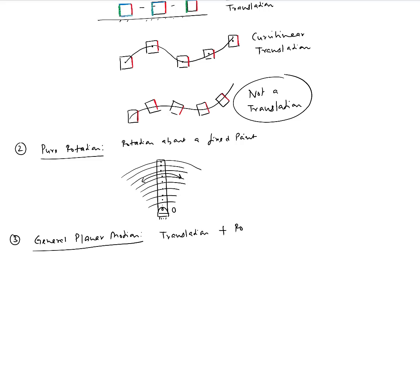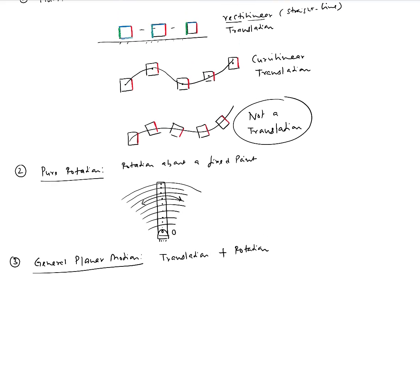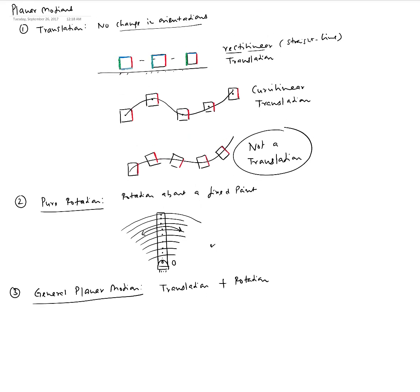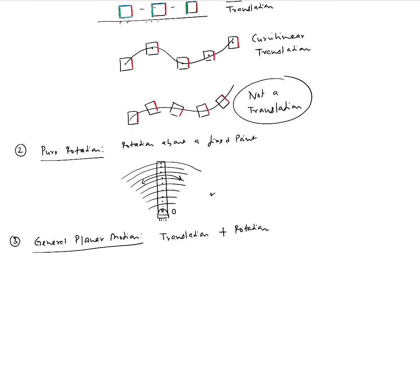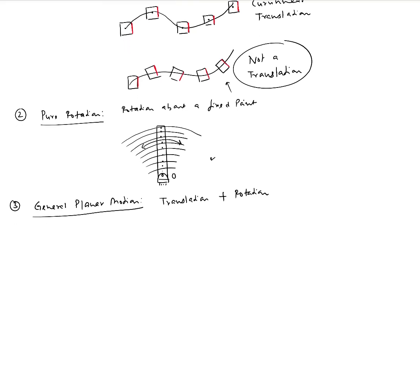So general planar motion is translation plus rotation. Pure rotation alone is not a general planar motion, and pure translation alone is also not a general planar motion. When you combine translation with rotation, you get a general planar motion. The earlier example of an object rotating while its center of mass moves along a curved path — that is an example of a general planar motion.